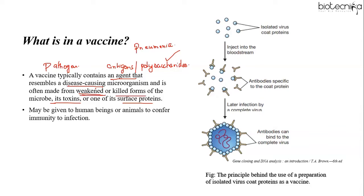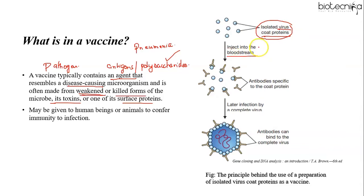Vaccines are now most commonly generated using gene cloning and recombinant DNA technology. The use of gene cloning in vaccine development centers on the discovery that virus-specific antibodies are sometimes synthesized in response not only to whole virus particles but also to isolated components of the virus, particularly purified preparations of proteins present in the viral coat. Viral coat proteins can be isolated and injected into the bloodstream, inducing an immune response. Antibodies specific to the coat protein are synthesized by the human body, so when later infected by a complete virus, the individual can generate an immune response and inactivate it.